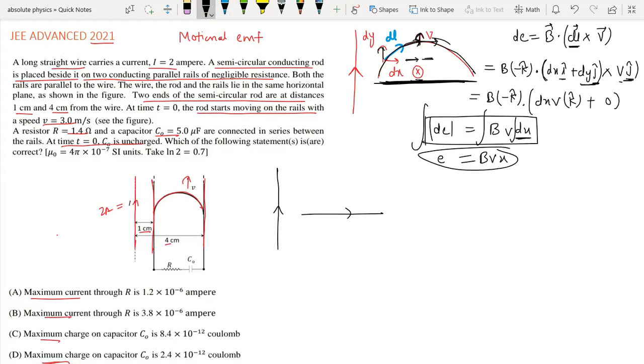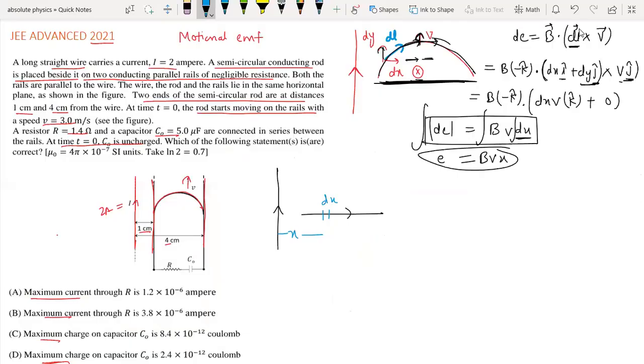the magnetic field is B = μ₀I/(2πx), so dE = (μ₀I)/(2πx) × v dx. Integrating from x=1 cm to x=4 cm, we get (μ₀Iv)/(2π) × ln(4).